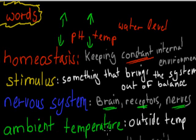Ambient temperature, that was just the temperature outside. So our body temperature is our internal temperature, and the ambient temperature is the temperature of the environment.